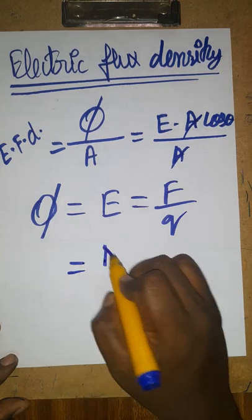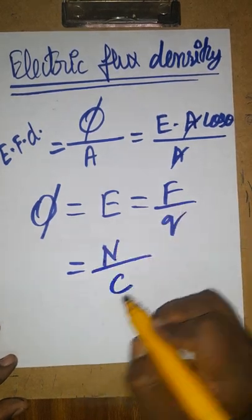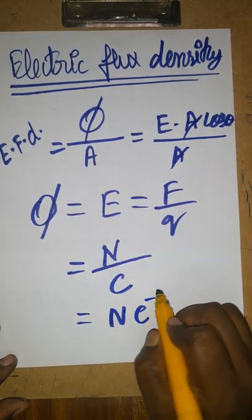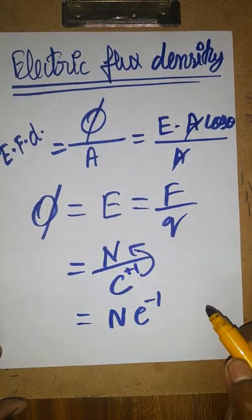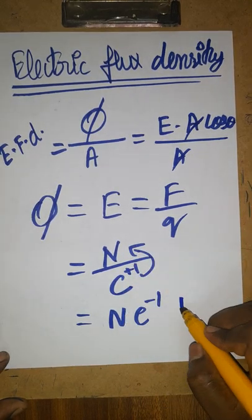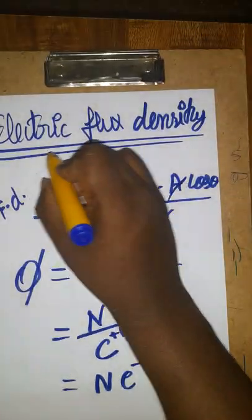That is Newton. Force unit Newton, charge unit coulombs. Newton per coulomb. From denominator to numerator, if you are bringing, plus 1 will become minus 1. This is the final unit of electric flux density: Newton coulomb^-1.